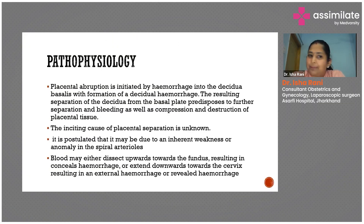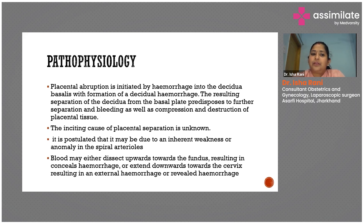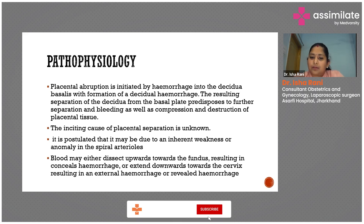Placental abruption is mainly caused by hemorrhage into the decidua basalis, which causes residual hemorrhage resulting in separation of the decidua from the basal plate. This predisposes further separation and bleeding. The exact cause of why placental separation starts is still unknown, however it is postulated that it may be due to inherent weakness or anomaly in the spiral arteries. Blood may dissect upwards towards the fundus resulting in a concealed hemorrhage, or it trickles down towards the cervix causing revealed hemorrhage.